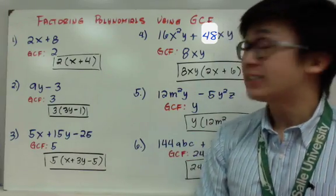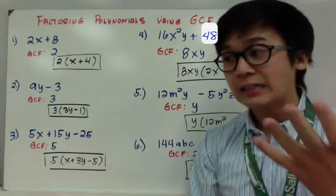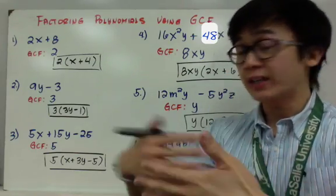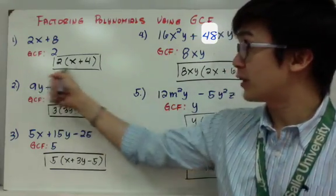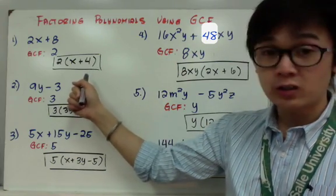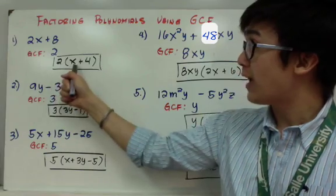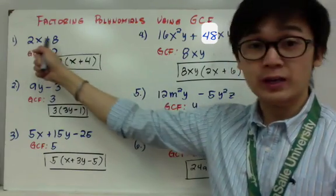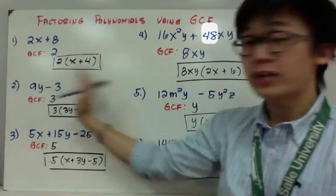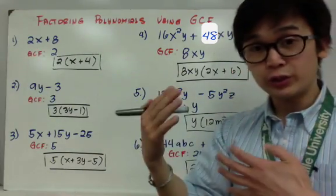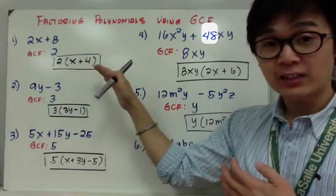Now factoring using GCF is basically the distributive property in reverse. So you're just reversing it. So if you reverse it, this will be your factor. Now if you want to make sure that your answer or your factor is correct, if you distribute 2 to x and 2 to 4, you'll have 2x plus 8. So that's how you would know that you are performing the correct factoring method.